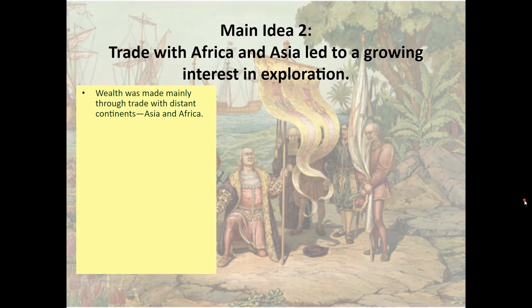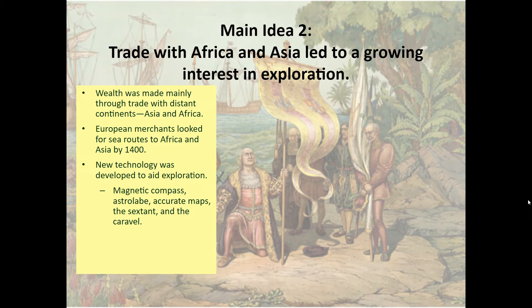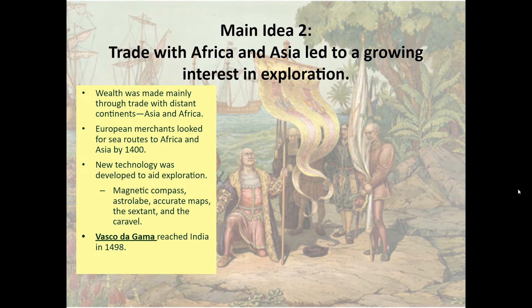Wealth was made mainly through trade with distant continents such as Asia and Africa. European merchants looked for sea routes to Africa and Asia by 1400. New technology was developed to aid in this exploration — developments such as the magnetic compass, a device called the astrolabe, more accurate maps, another device called the sextant, and a kind of trade ship called the caravel. Vasco da Gama, using these innovations, sailed down the west coast of Africa, rounded the tip of southern Africa, went out into the Indian Ocean, and reached India by 1498.